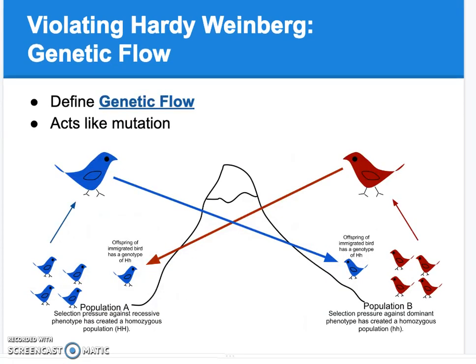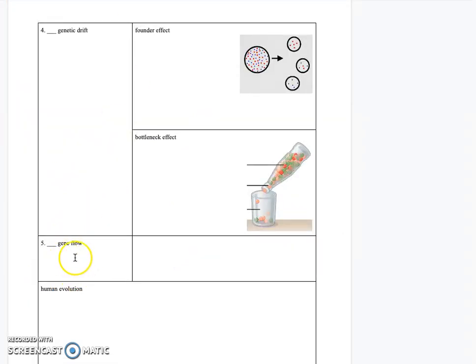The last allele frequency changer is gene flow. Unlike genetic drift — where the word 'drift' implies chance and random direction — gene flow has a specific direction. Gene flow is the transfer of alleles into and out of populations, and it results in changes in allele frequencies due to the entrance or exit of alleles from different populations.